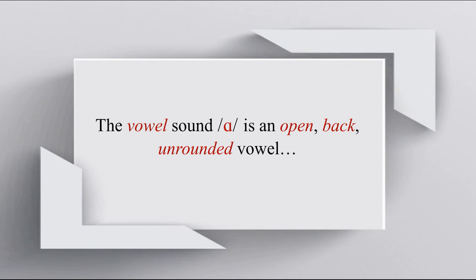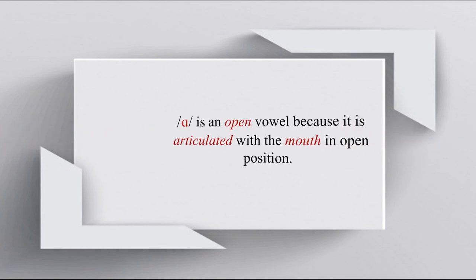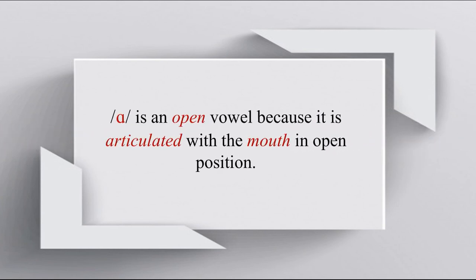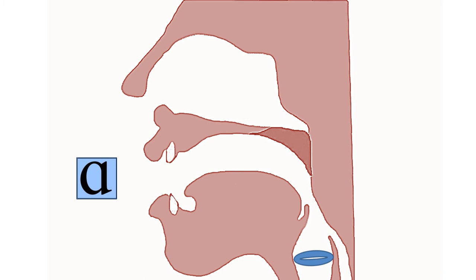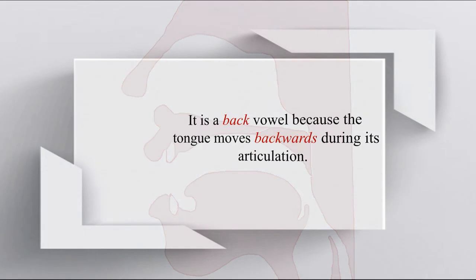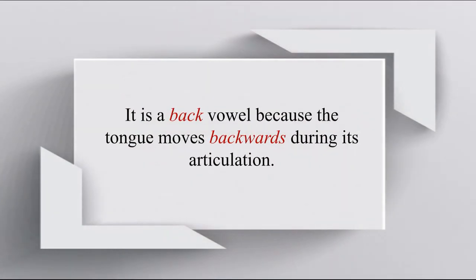The vowel sound AH is an open back unrounded vowel. AH is an open vowel because it is articulated with the mouth in open position. It is a back vowel because the tongue moves backwards during its articulation.